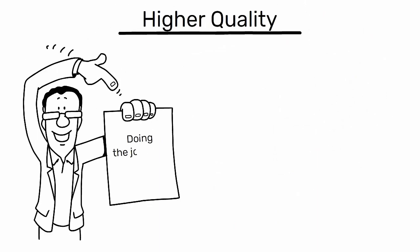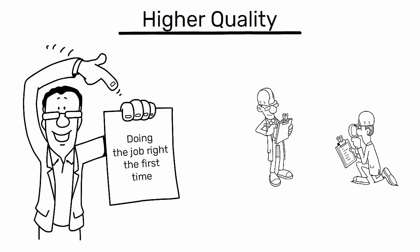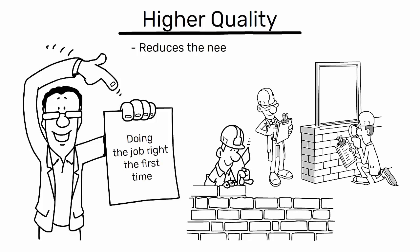Fourth, higher quality. Lean construction emphasizes on doing the job right the first time. Quality is built into the process, which reduces the need for rework, enhances the final product, and increases client satisfaction.